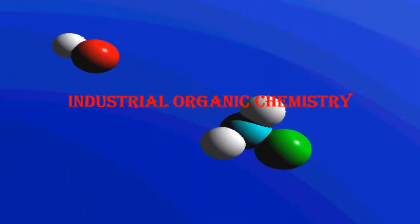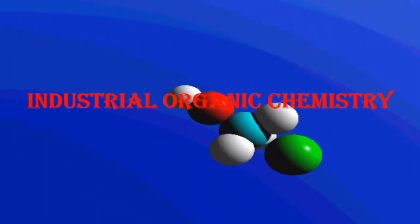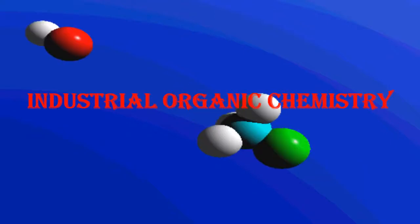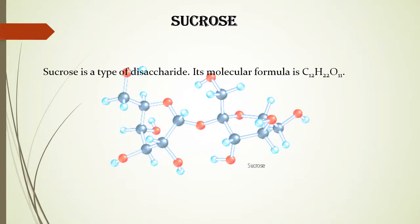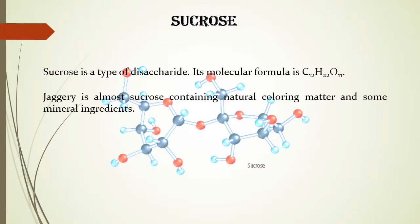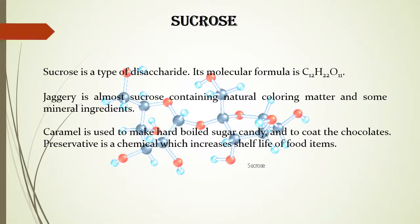Industrial organic chemistry: sucrose and ethyl alcohol. Sucrose is a type of disaccharide; its molecular formula is C12H22O11. Jaggery is almost sucrose, containing natural coloring matter and some mineral ingredients.